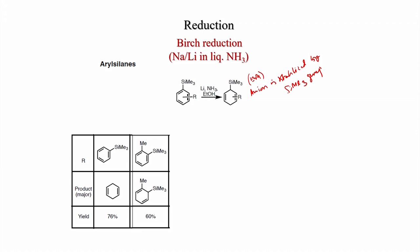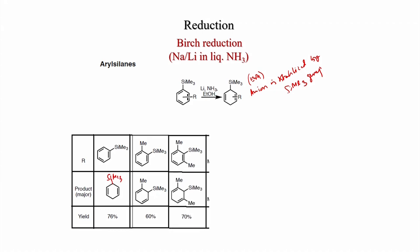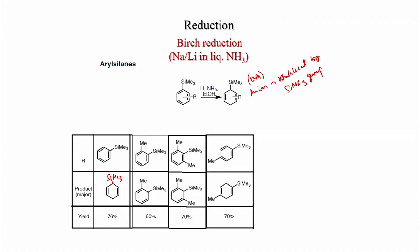With a methyl substituent, SiMe3 remains on the saturated carbon atom. For 2,6-dimethyl substitution, 70% yield is obtained. With a para-methyl group, also 70% yield is obtained. Interestingly, when two SiMe3 groups are present, one SiMe3 eliminates and you get the cyclohexadiene system with one SiMe3 on the double bond.